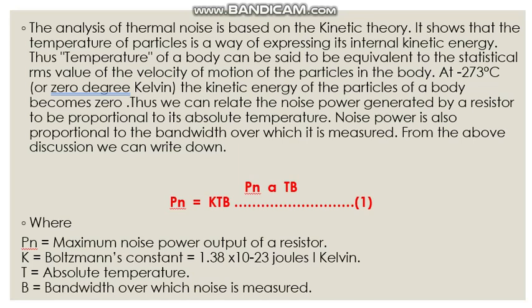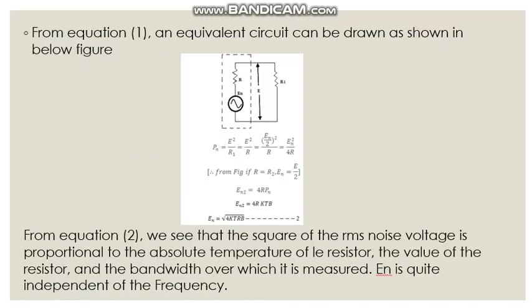In the thermal noise formula, Pn denotes maximum noise power output at the resistor, K is Boltzmann's constant (1.38 × 10⁻²³ joules per kelvin), T is the absolute temperature, and B is the bandwidth over which the noise is measured. From equation 1, we can draw an equivalent circuit where the equivalent noise power is equal to E²/R1 = E²/R2. The resultant En (RMS voltage) equals √(4KTRb). The square of the RMS noise voltage is proportional to the absolute temperature of the resistor, the value of the resistor, and the bandwidth over which it is measured. En is quite independent of frequency.